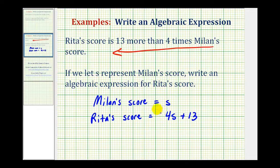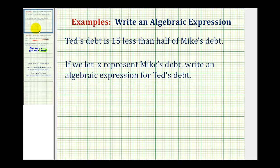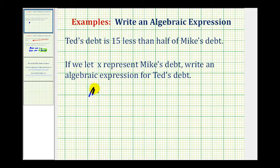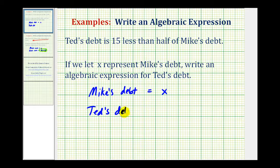So this is the expression that we're looking for. Let's take a look at a second example. Ted's debt is fifteen less than half of Mike's debt. If we let x represent Mike's debt, we want to write an expression for Ted's debt. So we'll start by defining Mike's debt is equal to x dollars. We want an expression for Ted's debt, which again is fifteen less than half of Mike's debt.